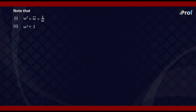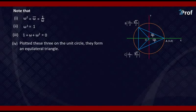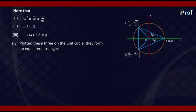The third property states their sum: 1 plus omega plus omega squared is equal to 0, which can be easily verified. It can also be noted that when we plot these three roots on a unit circle, they form an equilateral triangle. The first point A is (1, 0), the second point B is (minus 1 by 2, root 3 by 2), and the third is (minus 1 by 2, minus root 3 by 2). All these points lie on the unit circle and form an equilateral triangle.